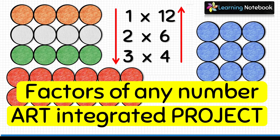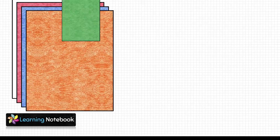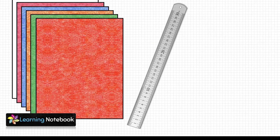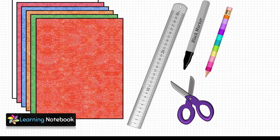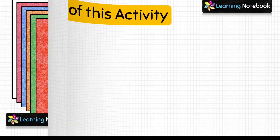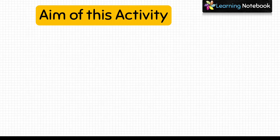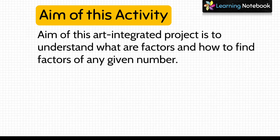The link to our website is below in the description box. For this activity we need few colorful thick sheets, a ruler, a black marker pen, a pencil, and a pair of scissors. The aim of this art integrated project is to understand what are factors and then learn how to find factors of any given number with the help of this interesting activity.